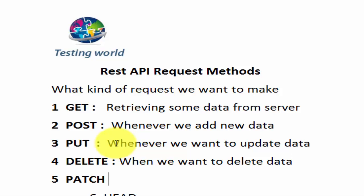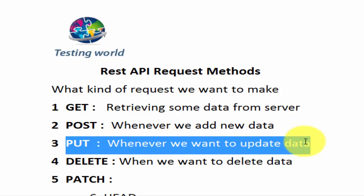Next is PATCH. PATCH is an important method and it is quite similar to PUT. When using PUT — say I have a bug with five fields: summary, description, reported by, assigned to, and priority — but I want to update only the description. Even so, with PUT you have to send all five fields to the server, with only one being the updated value.